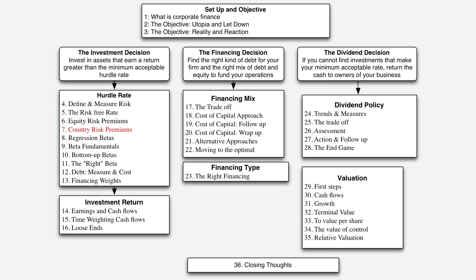In terms of setting, we're still looking at estimating hurdle rates, and this is part of that process. Here's how to think about forward-looking, dynamic premiums. Think about estimating the yield to maturity on a bond. You have the price of the bond, the coupons, and the face value. The yield to maturity is that internal rate of return — that discount rate that makes the present value of your cash flows equal to the price of the bond today.